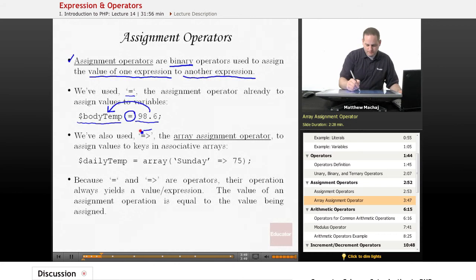Also we've seen the array assignment operator, which is the equal sign followed by the greater than. And we've seen that in associative arrays where we have a key and the way we associate a value, in this case, like maybe Sunday it was 75 degrees, we associate the number with it using the array assignment operator. And again, it takes the expression on the right hand side and assigns it to the expression on the left hand side.